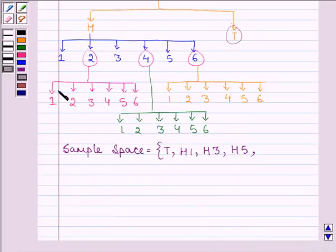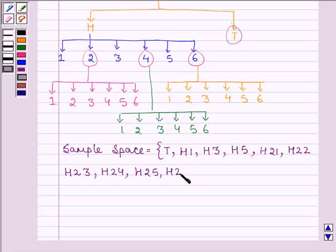Now H2,1, H2,2, H2,3, H2,4, H2,5, H2,6. Since when the head turns up, then a die is rolled. And if an even number appears on the die, then again a die is thrown. So we have H2 then from 1 to 6. That is H21, H22, H23, H24, H25 and H26.